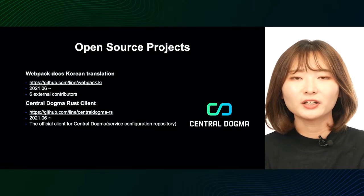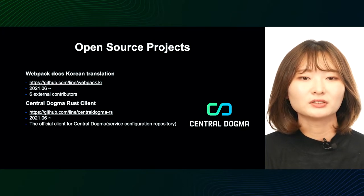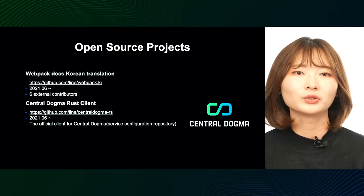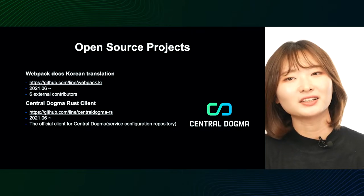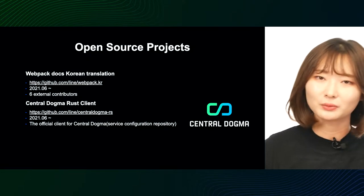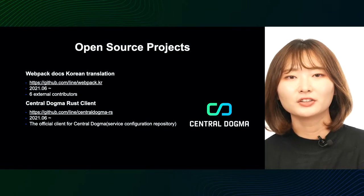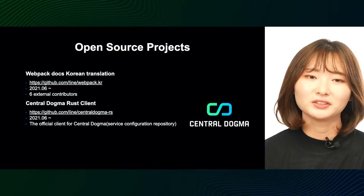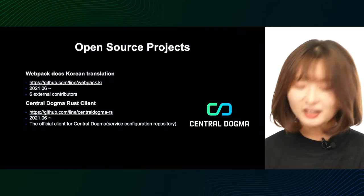Next is the Central Dogma Rust client. It is an open source that is used a lot inside LINE, and we have open-sourced the official Rust client for Central Dogma, our service configuration repository. This was very meaningful because in-house users directly made the Rust client according to their needs and even disclosed it as an open source.